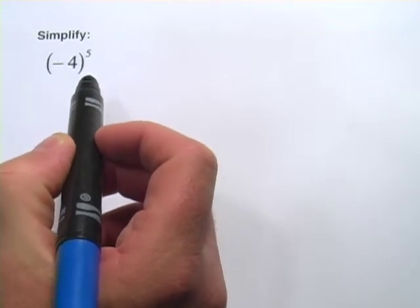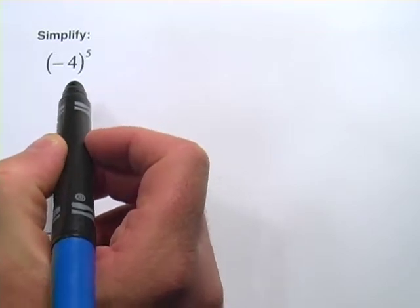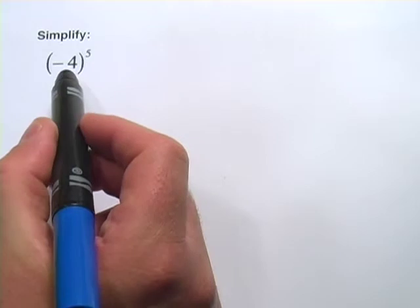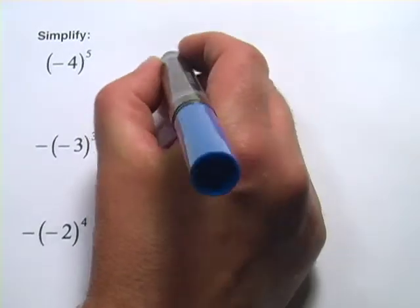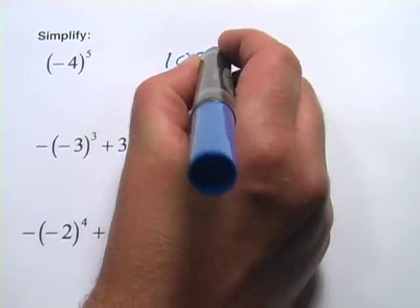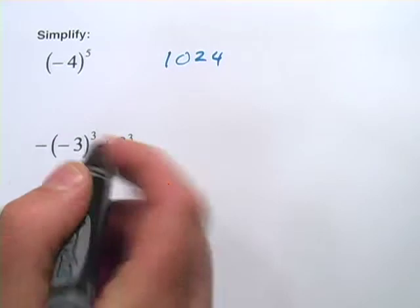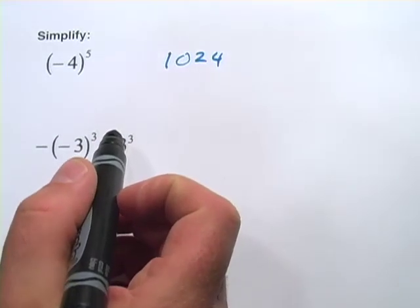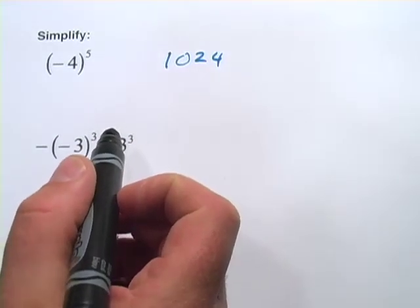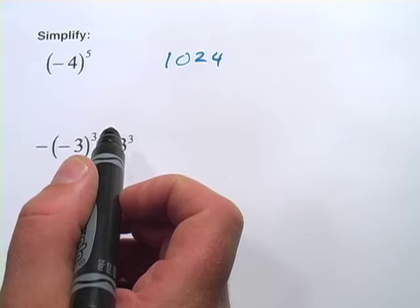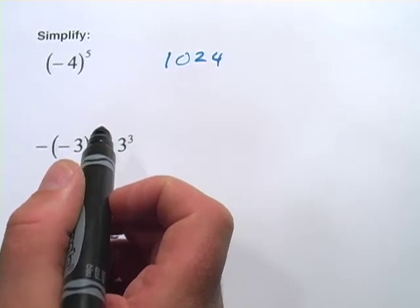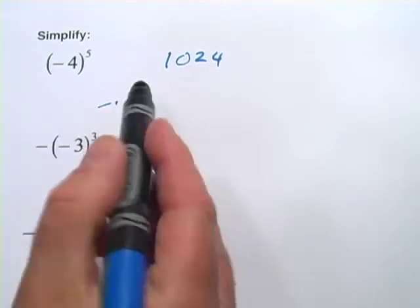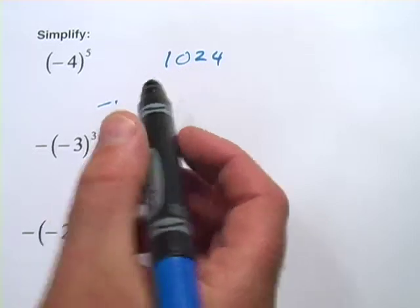I usually like to think about these as two separate parts. There's the 4 raised to the fifth power, which is 1024. You can try that on your calculator — you can multiply 4 by itself five times, or use the y-to-the-x key: type in 4, y to the x, 5. You should get 1024 in either case.